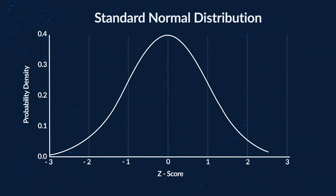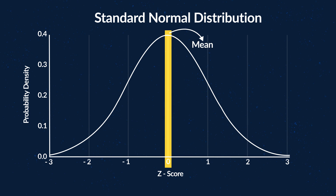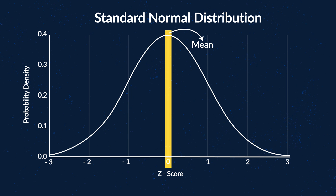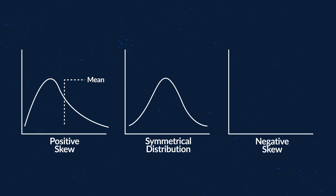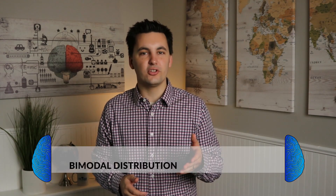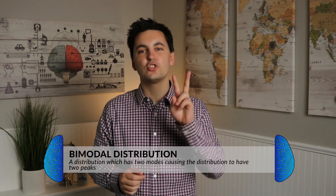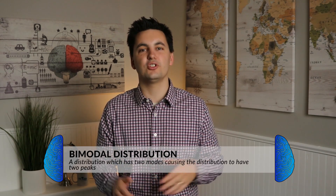In a normal distribution, there is just one mode, and the mean, median, and mode are all located at the center of the distribution at the zero point value. A normal distribution is not the most common frequency distribution — it's much more common that data sets will have a positive skew or a negative skew. A positive skew occurs when scores are low and clustered to the left of the mean, while a negative skew has higher scores clustered on the right of the mean. You might also see a bimodal distribution, which is when a distribution has two modes, causing it to have two peaks.